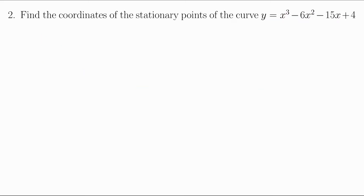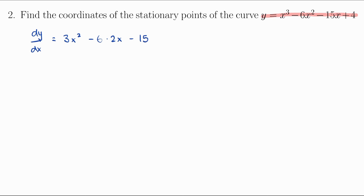In this second example we will be finding the coordinates of the stationary points of the curve y = x³ - 6x² - 15x + 4. Same as the first example, we find dy/dx. The derivative of x³ is 3x², the derivative of -6x² is -12x, the derivative of -15x is -15, and the derivative of 4 is 0. So dy/dx = 3x² - 12x - 15.